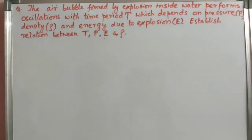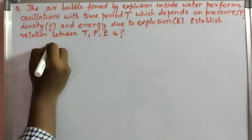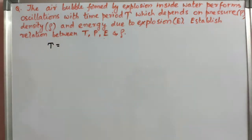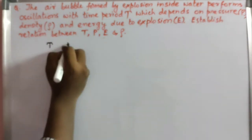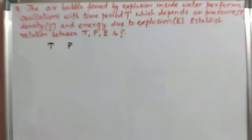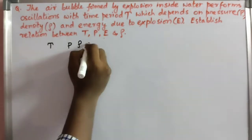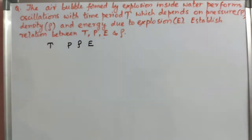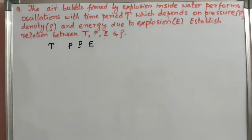When you are given a question in this way, first write what is given in the equation. Time period capital T is dependent upon: number one, pressure; number two, density; number three, energy. These are the things given in the equation — time period depends upon pressure P, density rho, and energy capital E.